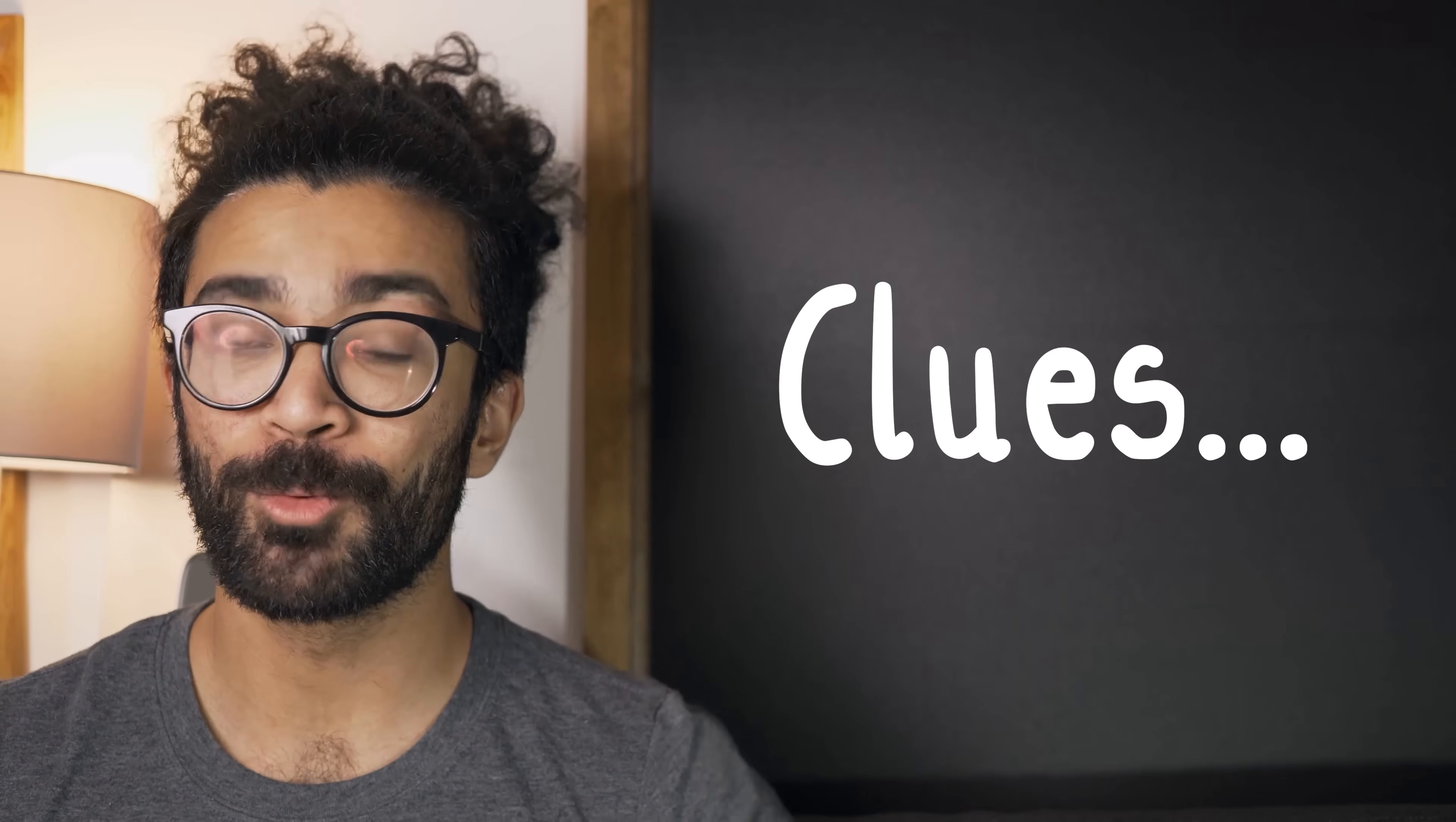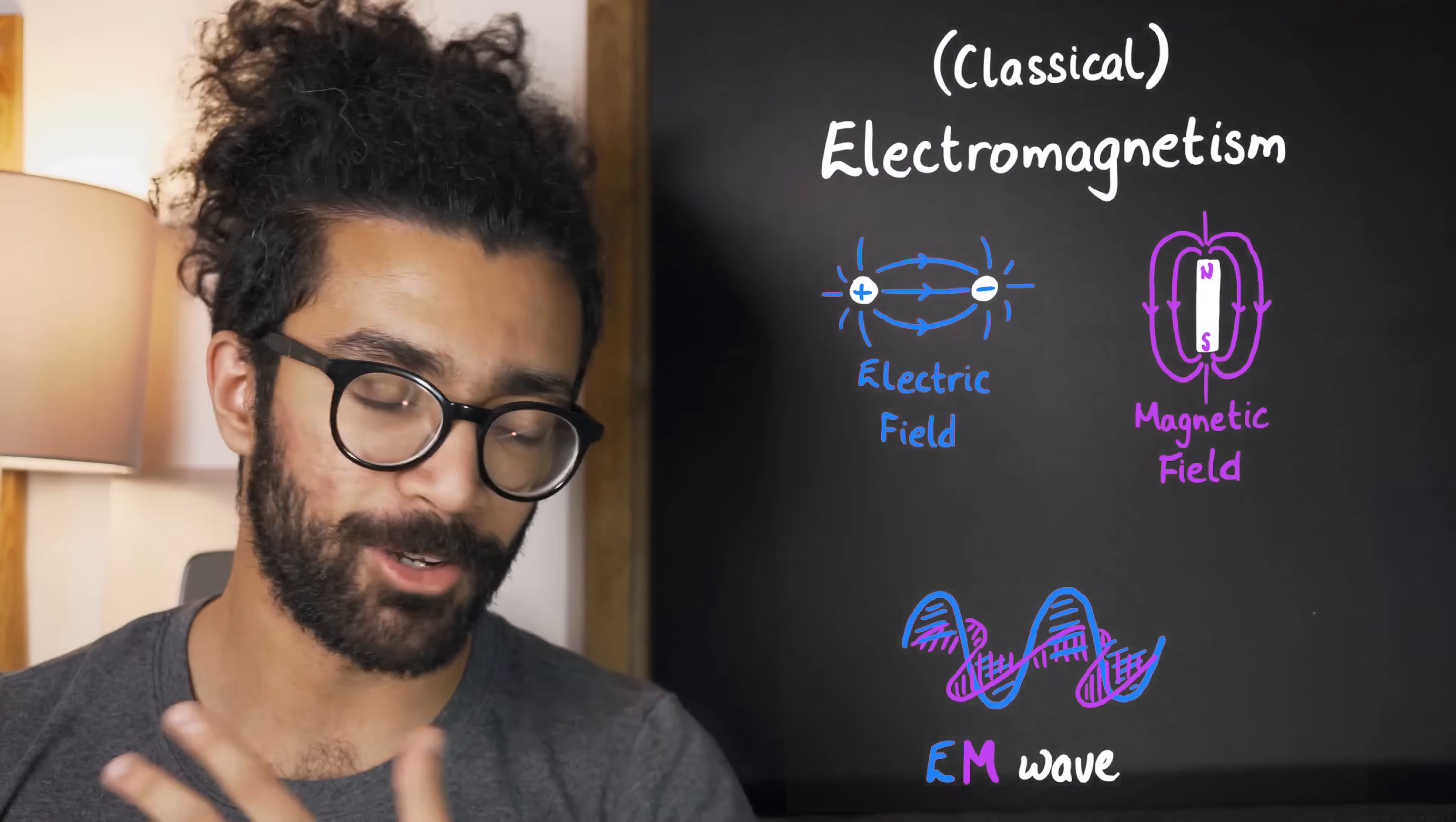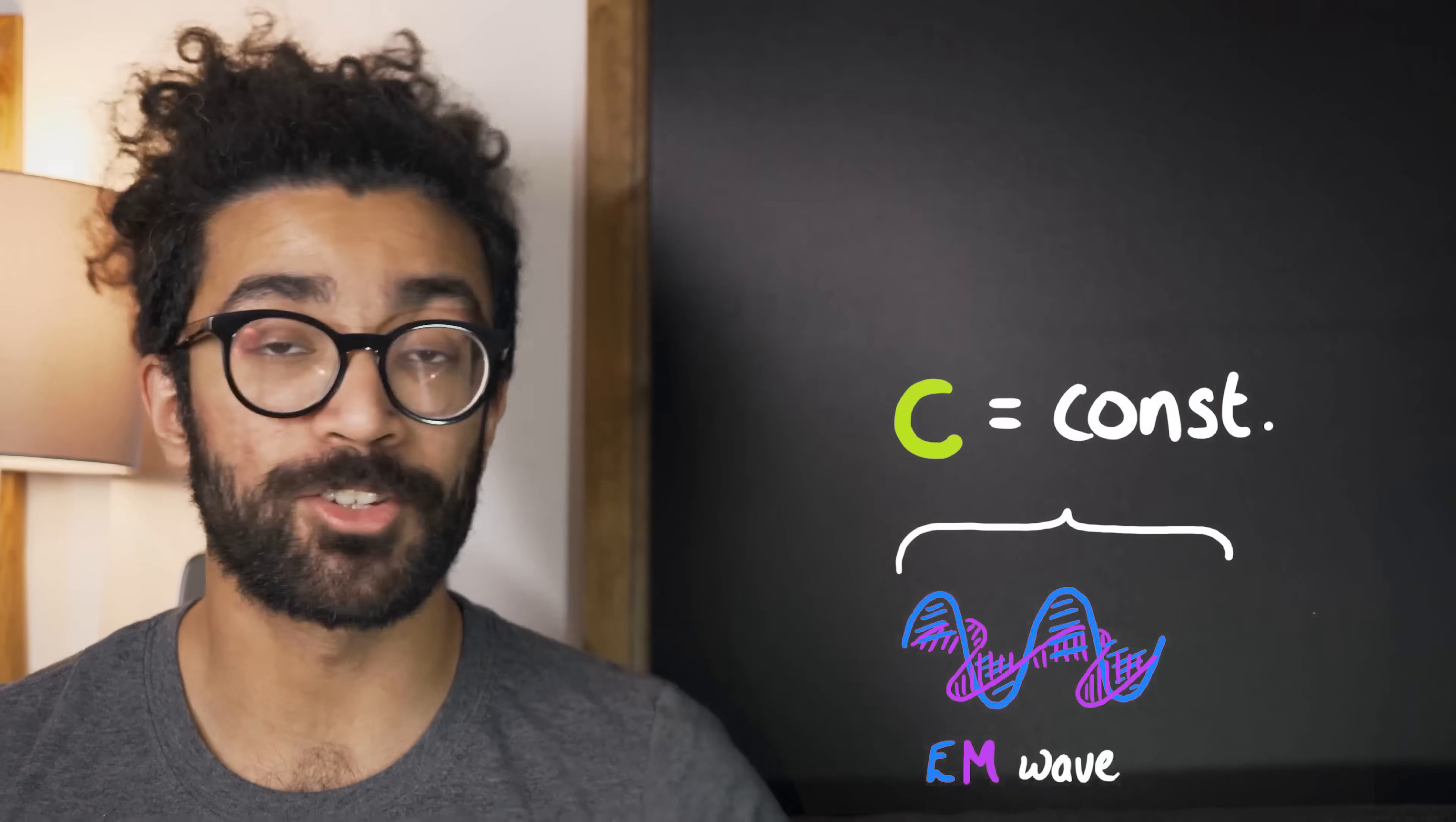One such clue was from the theory of electromagnetism. This is the study of electric and magnetic fields, as well as electromagnetic waves. And quite frankly, this theory of electromagnetism was doing a fantastic job of explaining how electric fields and magnetic fields and electromagnetic waves worked. But one thing that it predicted was that electromagnetic waves should travel at a constant speed, independent of who was measuring it.